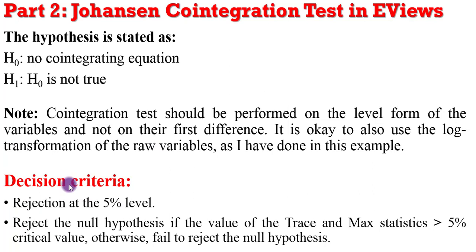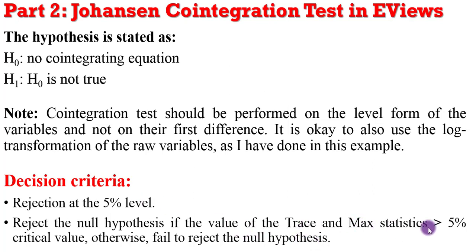Regarding decision criteria: the Johansen co-integration test produces two outputs — the trace statistics and the Max-Eigen statistics. Rejection is at the 5% level. If the value of the trace statistic and the Max-Eigen statistic are greater than the 5% critical value, you reject the null hypothesis. Otherwise, you fail to reject the null. Watch out for these values to determine your conclusion.